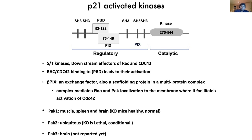There are three different PAK kinase family members. PAK1 is expressed ubiquitously and when deleted in mice the animals remain healthy with no disease phenotype. PAK2 is also ubiquitous, and deletion causes mice to die in utero, necessitating a conditional mouse model. PAK3 is specifically expressed in the brain. PAK kinases are highly conserved between human and mouse.